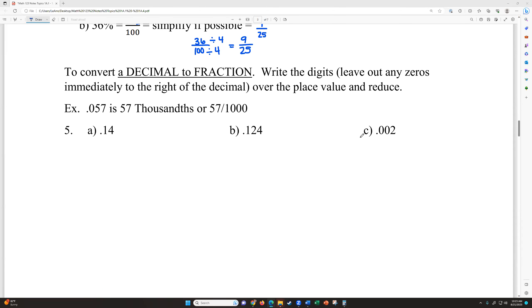All right. This is the continuation of the note from our class today. So we stopped right here with to convert a decimal to a fraction. The goal of this is to write the digits, leave out any zeros immediately to the right of the decimal over the place value and reduce.